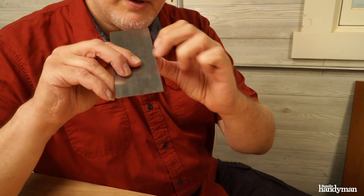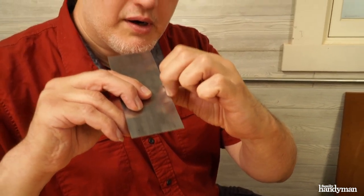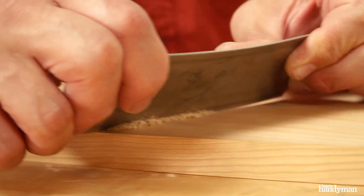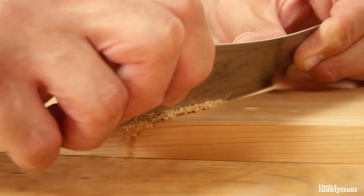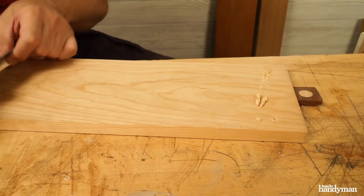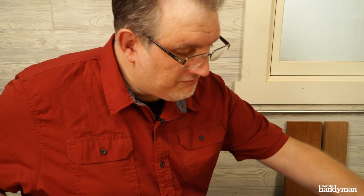On the edge it has a little burr, and as we scrape it along, it takes just a little bit of wood off the surface, leaving us with a beautifully smooth, open surface ready for finish.